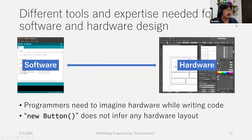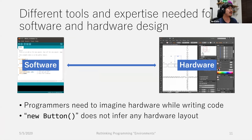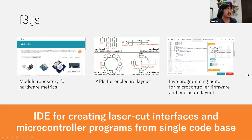This results in a substantial mental gap between these two. For instance, when the programmer writes a new button in a GUI application, we expect that a button appears. But in the physical computing device world, it doesn't infer any hardware layout — the programmer needs to define this kind of layout from scratch in a CAD tool. To address this issue, F3.js allows the programmer to write a single piece of code that defines not only the firmware but also the enclosure layout. The key components of F3.js are the module repository, APIs for the enclosure layout, and the live program editor. Let me just show a live demo of this environment.